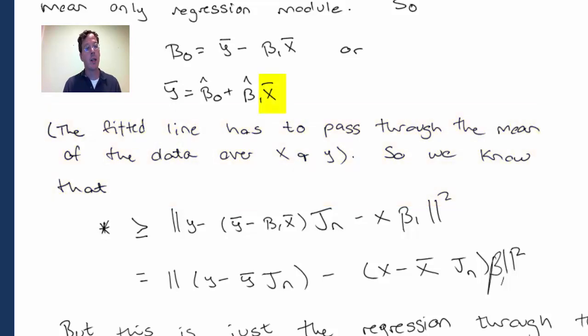Because when we plug in x-bar as a predictor, we get y-bar out as an outcome, which is an interesting fact. In other words, the regression line always has to go through the mean of the y's and the mean of the x's.